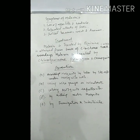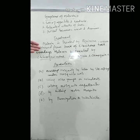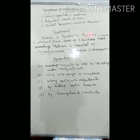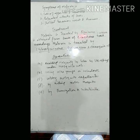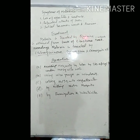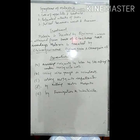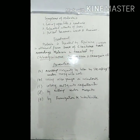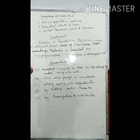The treatment of malaria is done with quinine. Traditionally, malaria was treated by quinine, a chemical obtained from the bark of the cinchona tree. Nowadays, malaria is treated by drugs such as chloroquine, primaquine, and camoquine.